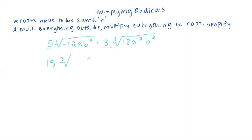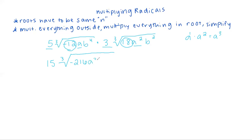Then we multiply everything under the cube root. Negative 12 times 18 equals negative 216. It's okay to have negatives under cube roots — it's only under even roots that you get into imaginary numbers. Then we multiply a times a squared: using exponent rules, we add the exponents to get a cubed. And for b, we add the exponents 4 and 2 to get b to the sixth. From here we simplify just like in the first three problems.